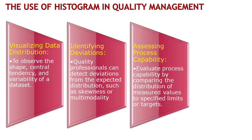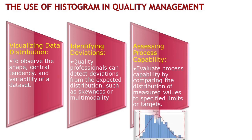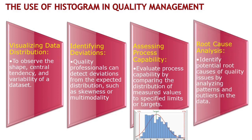Histograms also help us assess process capability. We can compare the distribution of measured values to specified limits — upper specification and lower specifications. It's like giving our process a report card, helping us identify what's going into the rejection zone and acceptance zone. And here's the best part: histograms are like superheroes in root cause analysis. They assist us in identifying potential root causes of quality issues. By analyzing patterns and outliers, we can uncover the hidden secrets behind the data.